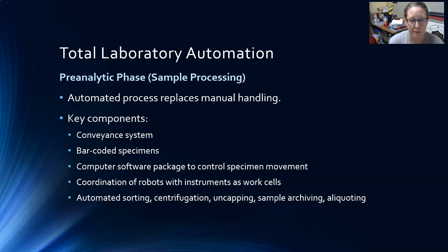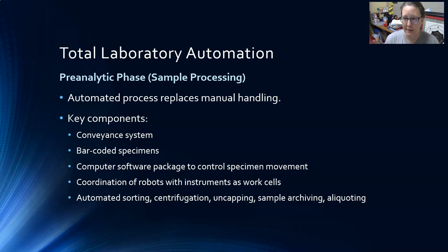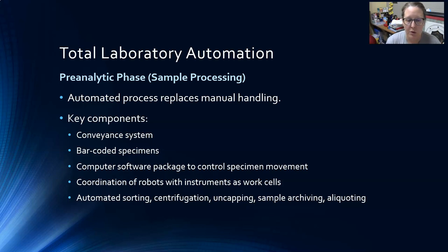Key components of automation in the pre-analytic phase include a conveyance system — something like a conveyor belt to transport tubes across the lab to different areas. Barcodes are needed to track tubes through the system, along with computer software to control specimen movement, direct which track to put it on, and which analyzer to send it to. Robots are coordinated with instruments as work cells, and there is automated sorting of specimens — you can load all kinds of tubes and the system sorts between hematology, chemistry, coagulation, and specialized immunoassay chemistry testing.